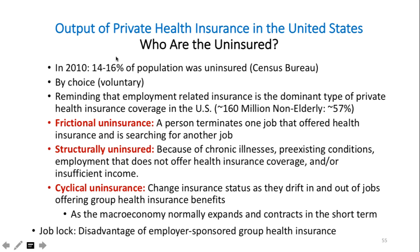The uninsured can be categorized into three types. Frictional uninsurance occurs when a person terminates one job that offered health insurance and is searching for another. Structural uninsurance occurs because of chronic illnesses or pre-existing conditions where employment does not offer coverage, or due to insufficient income. Cyclical uninsurance occurs as people shift in and out of jobs offering group health insurance benefits.